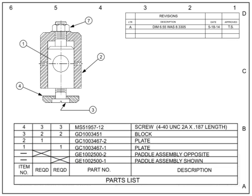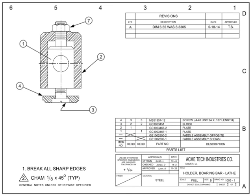For the assembly labeled Paddle Assembly Shown, the quantity column is on the right, and the quantity column for the paddle assembly opposite is on the left. In summary, blueprints are the way in which technical ideas and information are communicated from the design team to the technicians and manufacturers tasked with implementing the design.